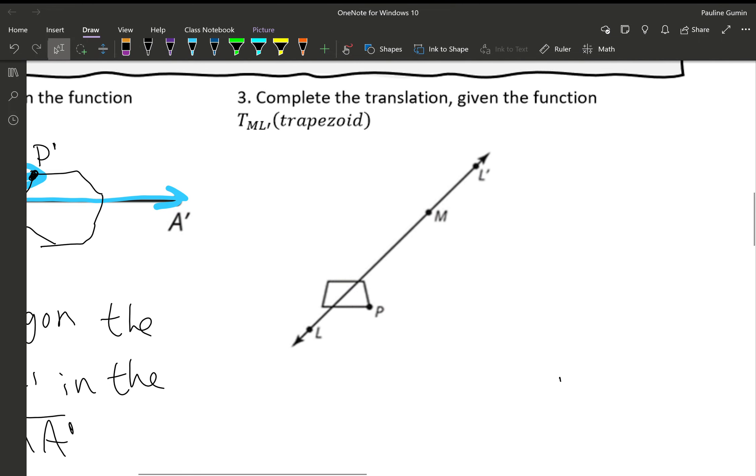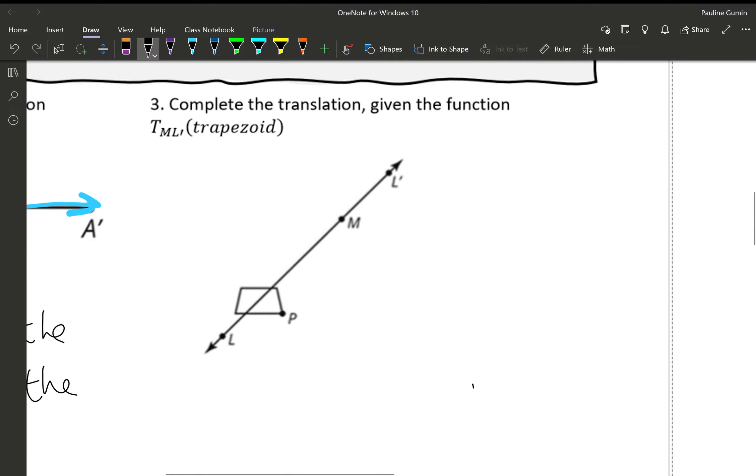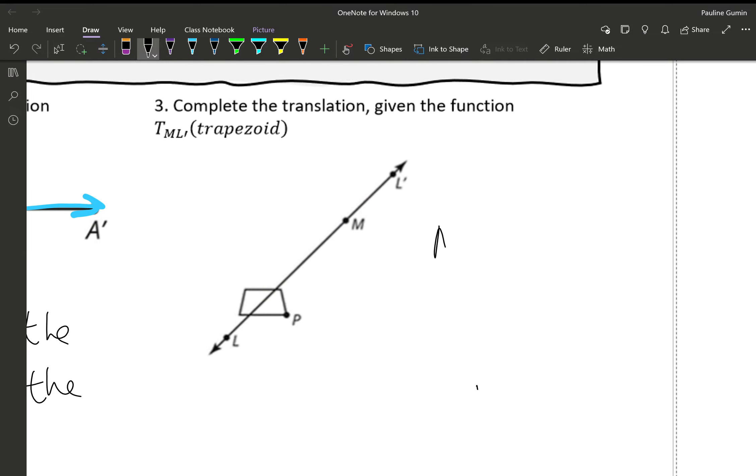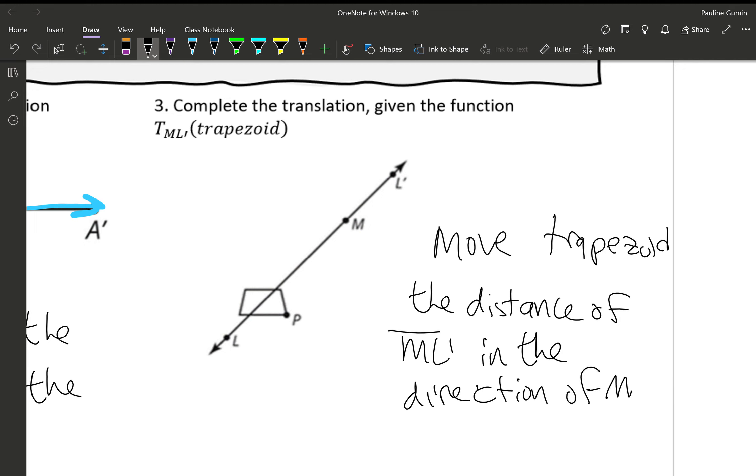Let's look at number three. Here we have T ML prime trapezoid. This means move trapezoid the distance of ML prime in the direction of ML prime.